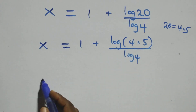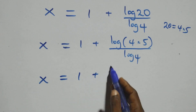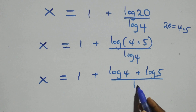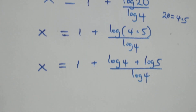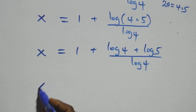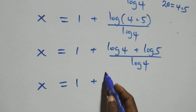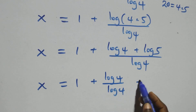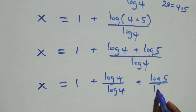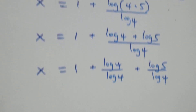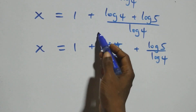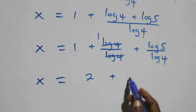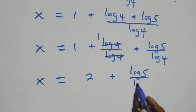This also follows the log product rule. We have x equals to 1 plus log 4 plus log 5, over log 4. We separate these into two fractions: x equals to 1 plus log 4 over log 4 plus log 5 over log 4. Log 4 over log 4 cancels to give 1, which implies x equals to 1 plus 1 plus log 5 over log 4, that is 2 plus log 5 over log 4.